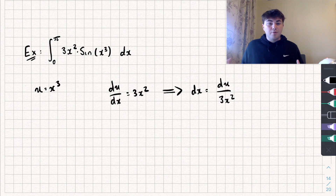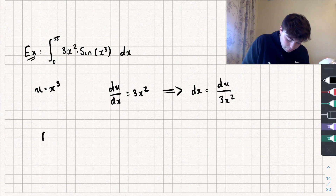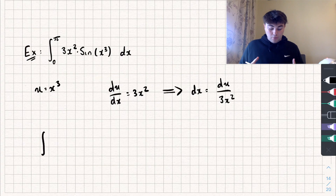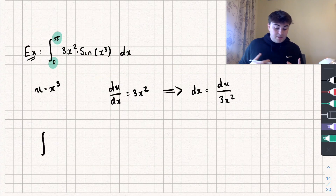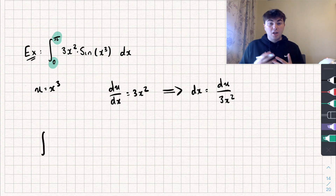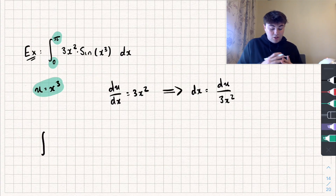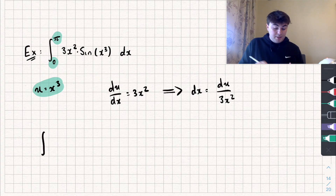Now let's substitute everything we know back into the original integral. I'm going to change the limits of the integral now, because it's pretty easy to do. Currently the limits are with respect to x, but since we're integrating with respect to u, we have to change those limits. We can do that using the equation u = x cubed — just substitute in the lower and upper limits to get the new limits.